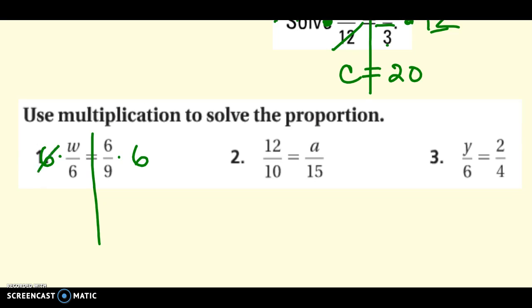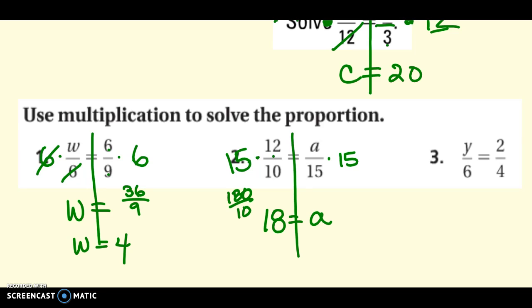Multiply by 6. Cancel, cancel, I get w by itself. Now I just have to do the math. So here it looks like it'd be easier to do 6 times 6 and then divide it by the 9. So I get w is equal to 4. Or here, trying to get a by itself. So multiply by 15. So again, a calculator might help you. I might do 15 times 12. That's 180. And then divide it by 10. So I get 18.